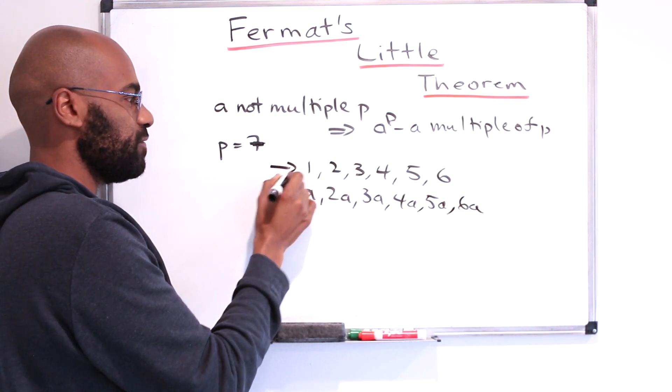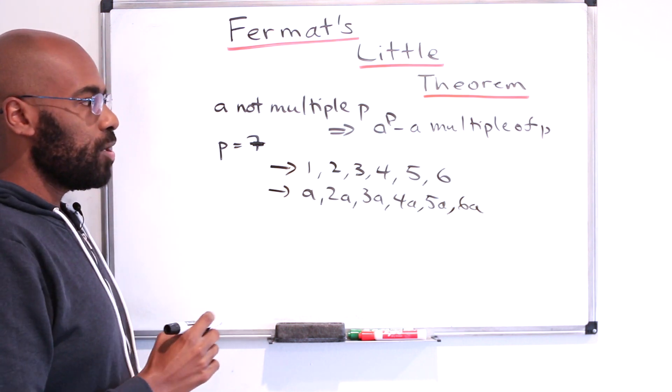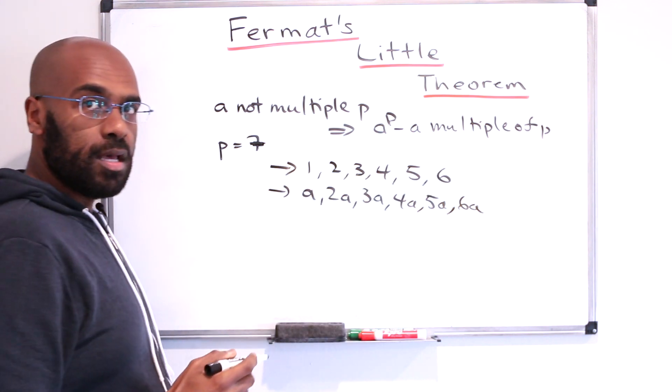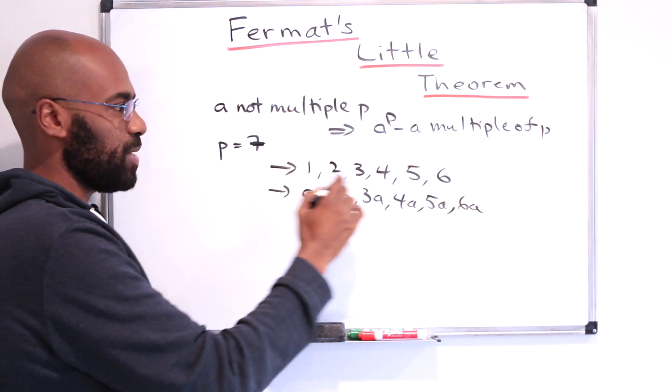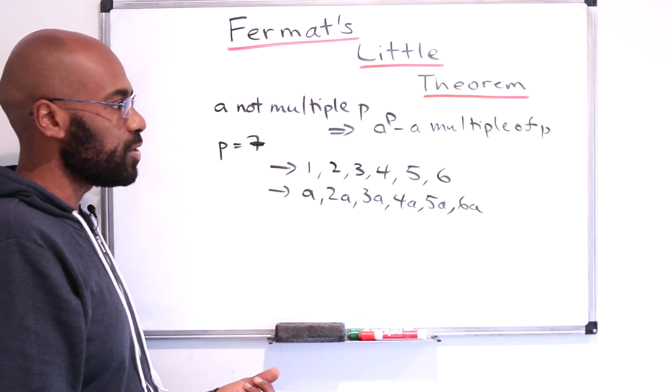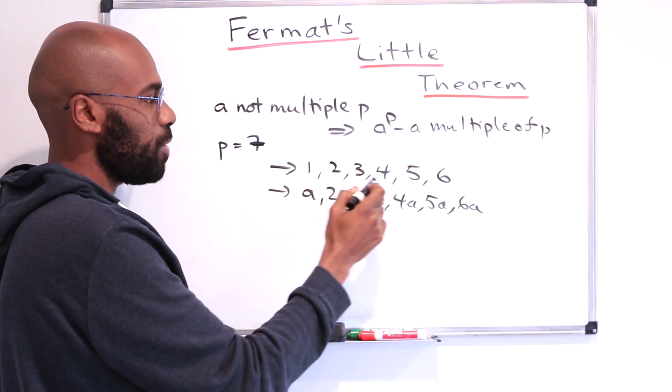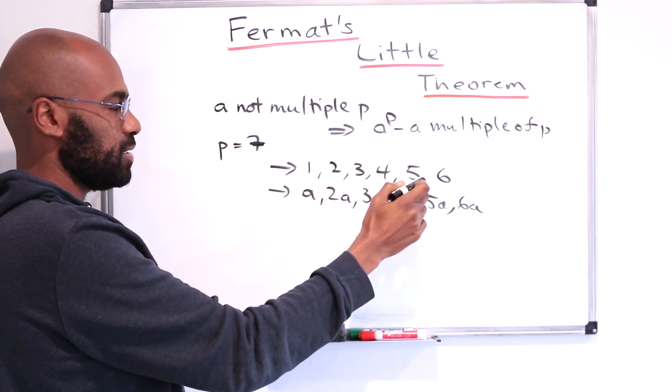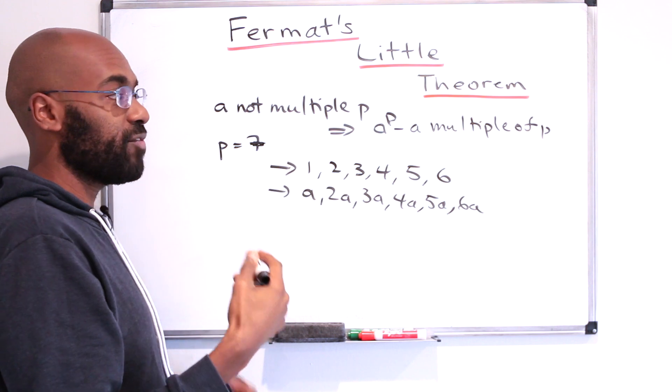So we have two lists of numbers here. Notice this first list, if we divide each of these numbers by 7, they are their own remainders, because they're small numbers. So we get every single possible remainder in this list when we divide by 7 except for 0.